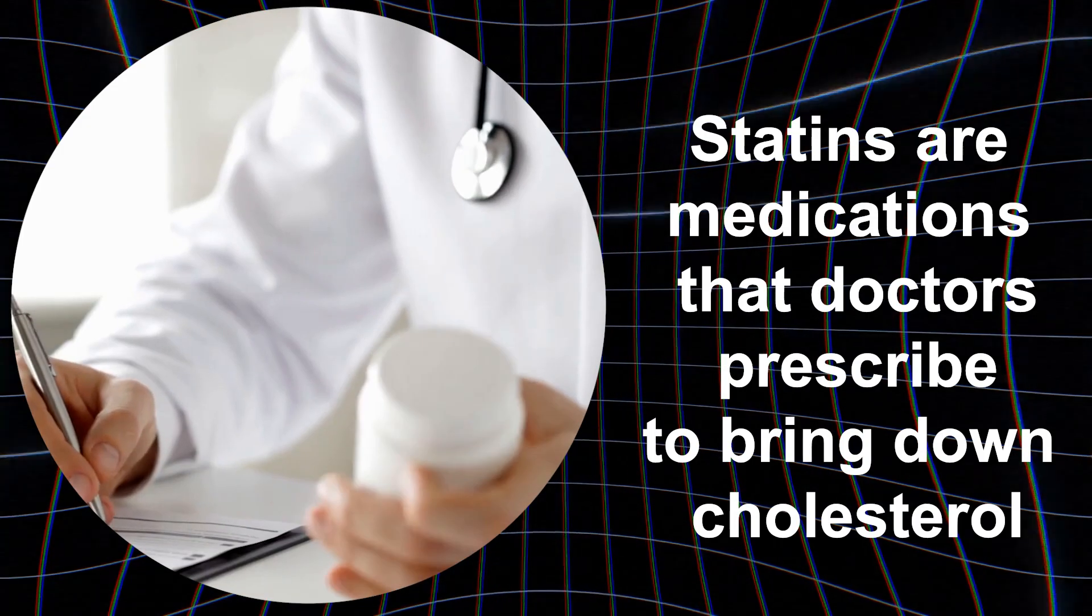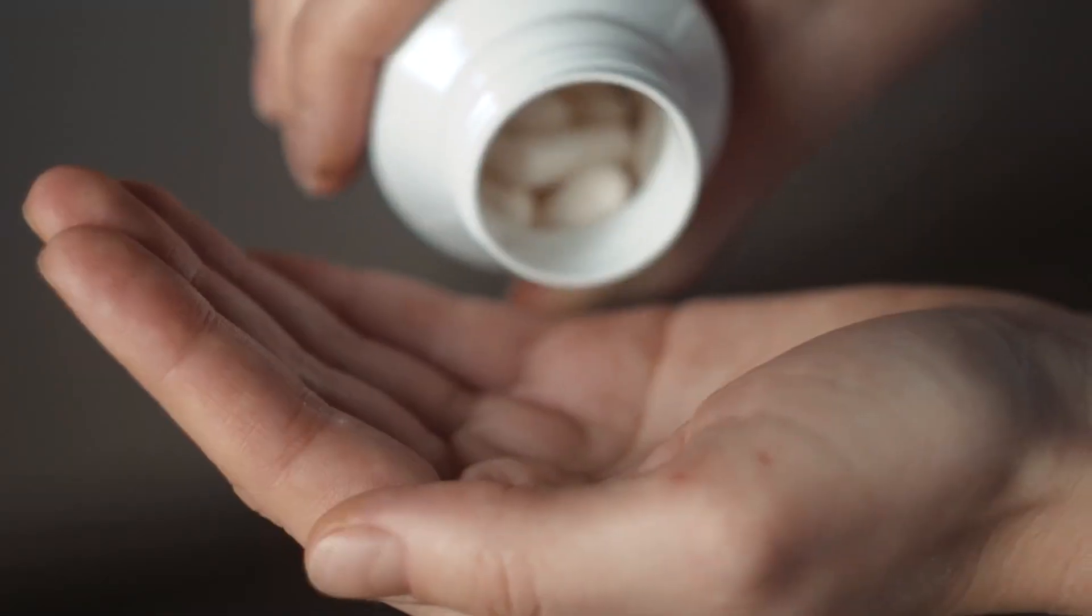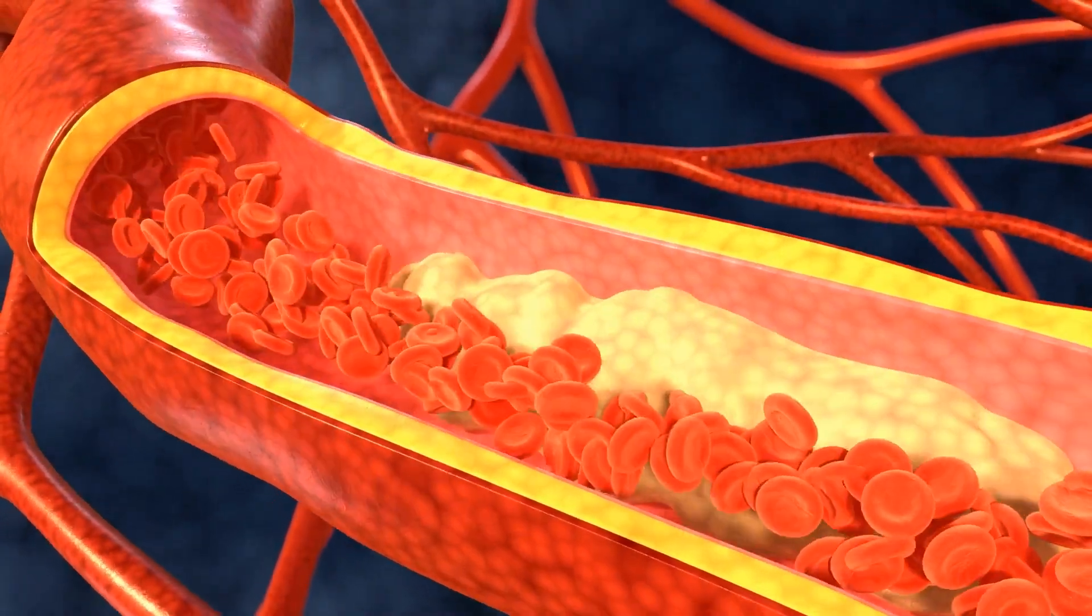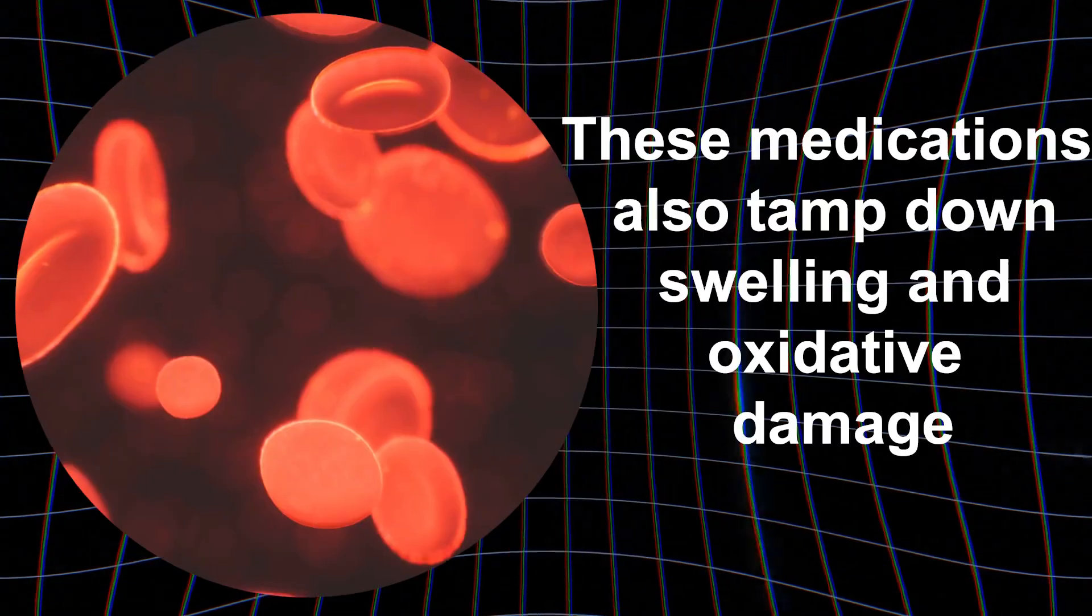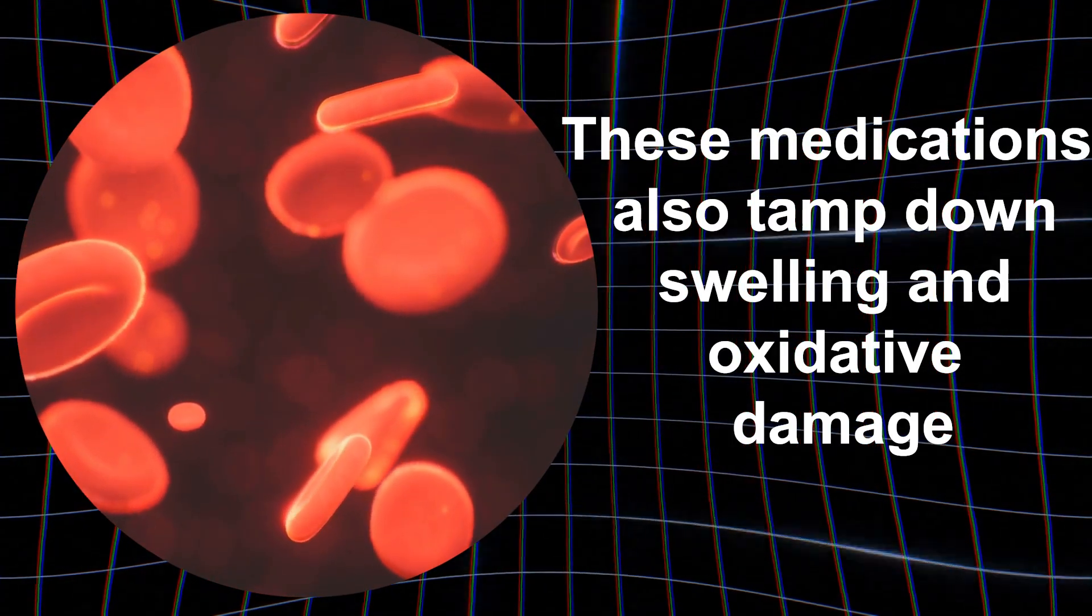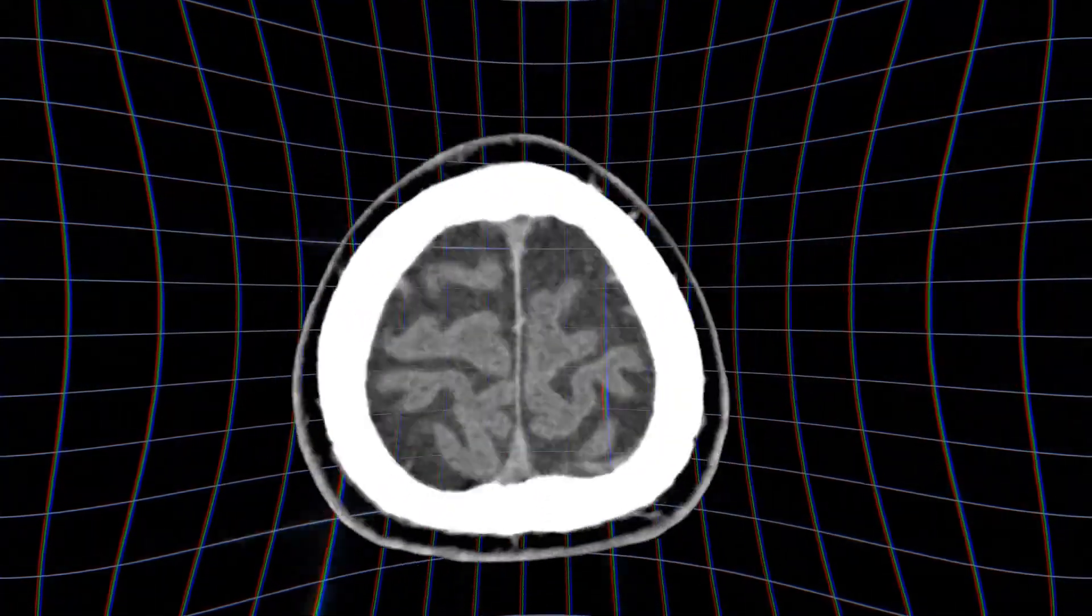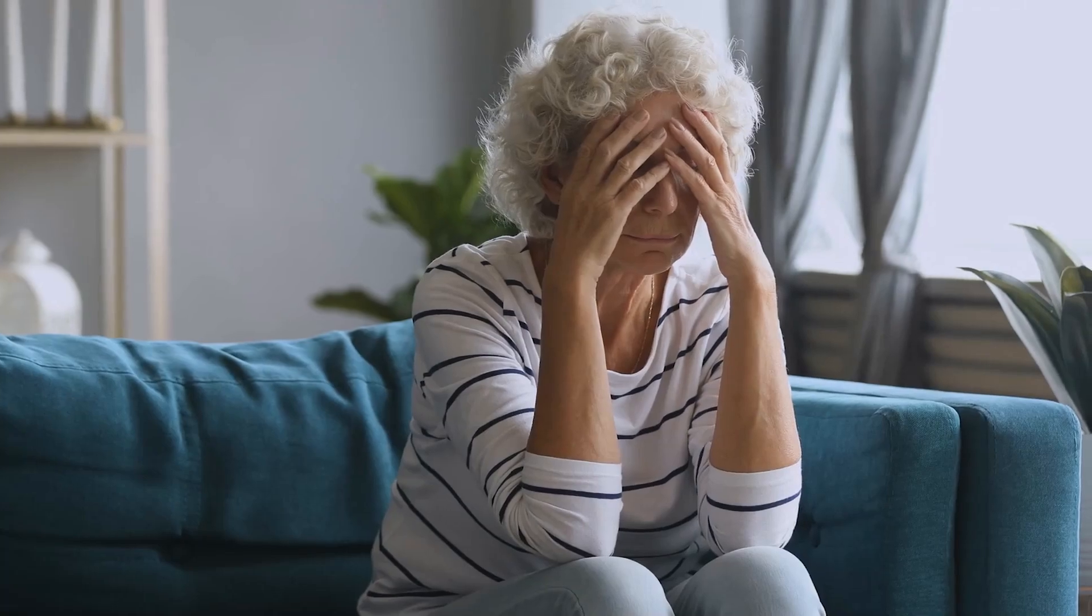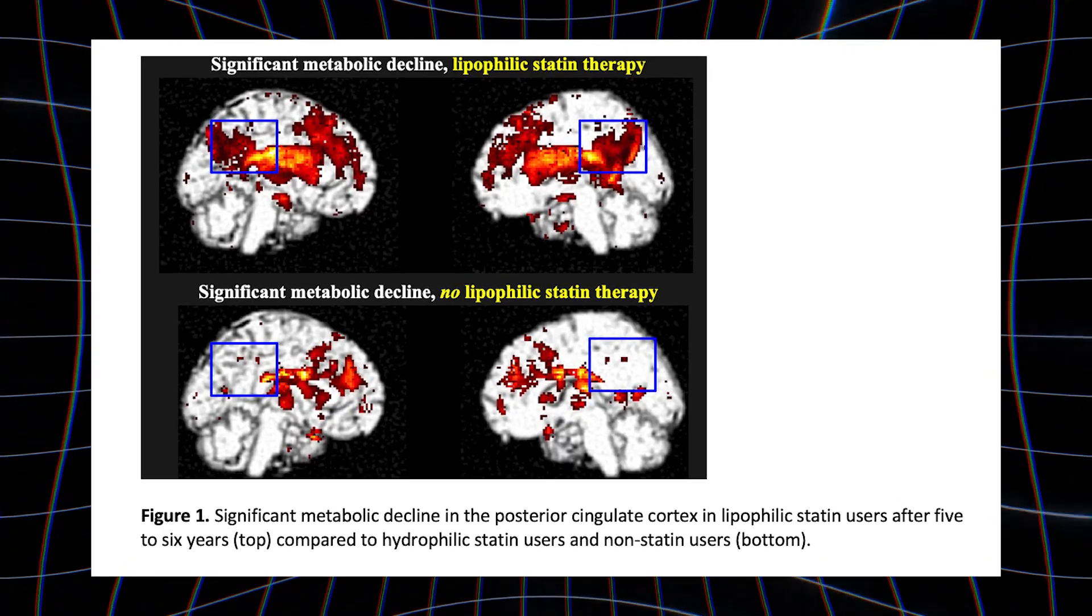Eight, statins. Statins are medications that doctors prescribe to bring down cholesterol and hopefully lower folks' risk of heart issues down the road. But there are some mixed ideas on whether long-term use of these pills can raise the chances of losing your memory and getting dementia. Cholesterol is important for keeping brain cells and nerve fibers healthy. Statins cut cholesterol, so some scientists worry that could mess with the brain's wiring over time. These medications also tamp down swelling and oxidative damage. That's likely good for dodging dementia. But experts don't totally understand how statins interact with the brain chemical soup. Certain statins can sneak past the blood-brain border and directly change cholesterol levels up in the brain. So it's possible they influence thinking capacity. But different statins probably do this in different ways. So the connection between statins and dementia isn't clear-cut.